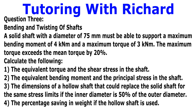Our question states: a solid shaft with a diameter of 75 millimeters must be able to support a maximum bending moment of 4 kilonewton meters and a maximum torque of 3 kilonewton meters. The maximum torque exceeds the mean torque by 20%. Calculate the following: the equivalent torque and the shear stress in the shaft; the equivalent bending moment and the principal stress in the shaft; the dimensions of a hollow shaft that can be used to replace the solid shaft for the same stress limits if the inner diameter is 50% of the outer diameter; and finally, the percentage saving in weight if the hollow shaft is used.